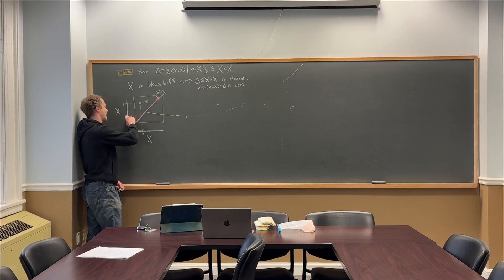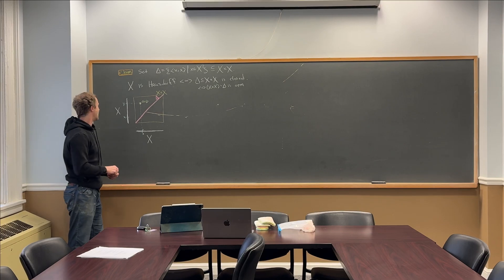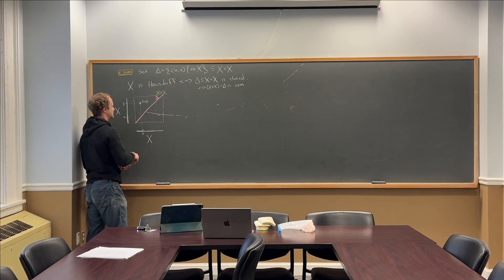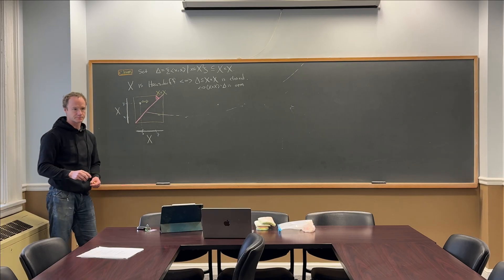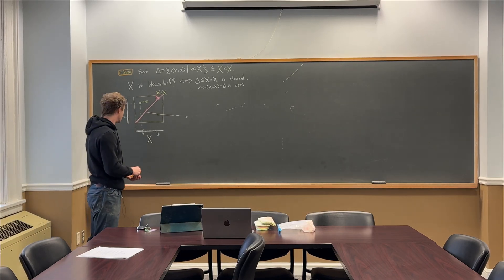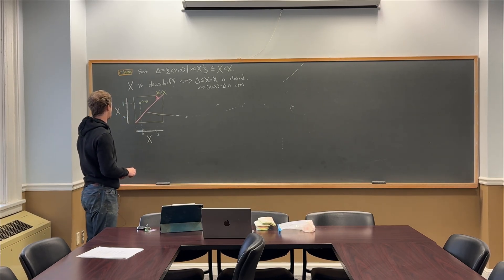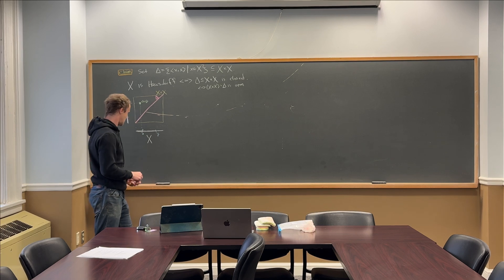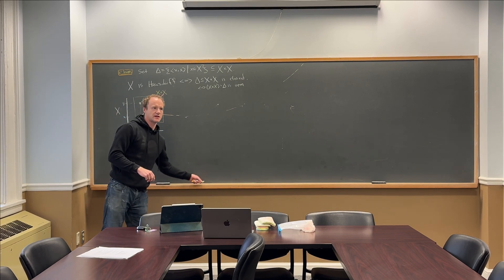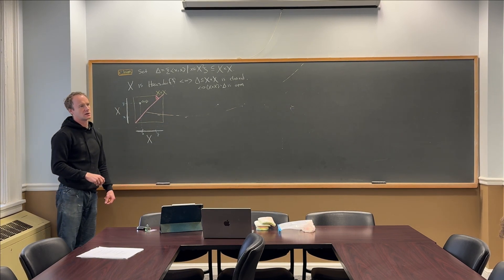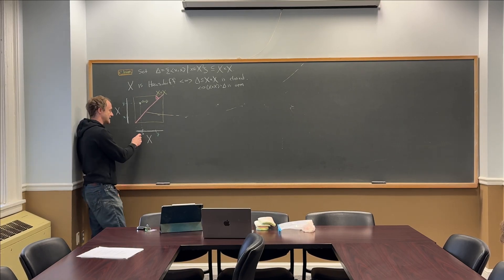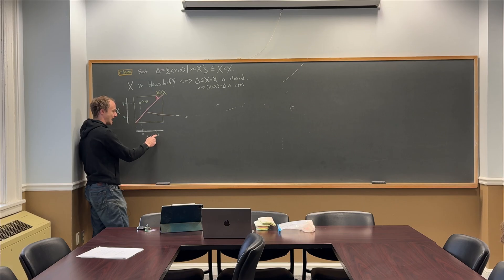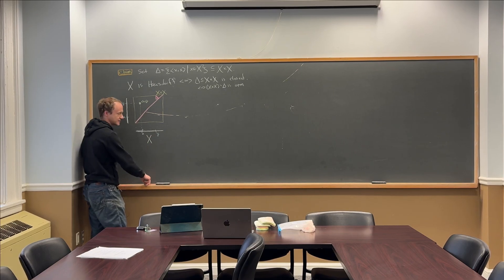So notice a copy of x goes right here also, and then a copy of y goes right here. And now since our space is Hausdorff, we can find a neighborhood of x and a neighborhood of y that are non-intersecting.